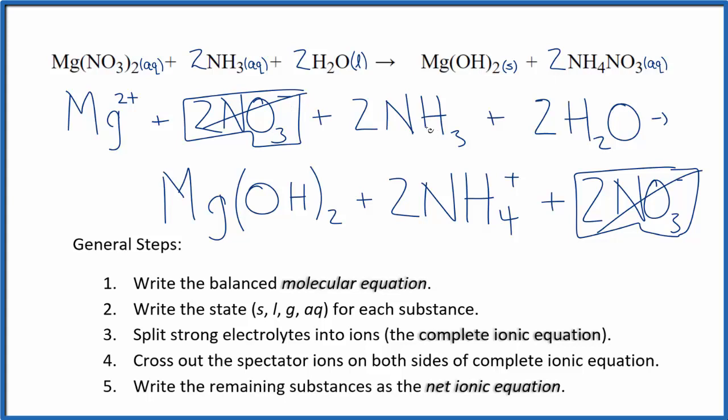We didn't split the ammonia apart. It's a weak base. It's a weak electrolyte. We didn't split the water apart. That's a liquid here. And we didn't split the solid, the magnesium hydroxide apart. Let me clean this up. We'll write the states and have our net ionic equation.